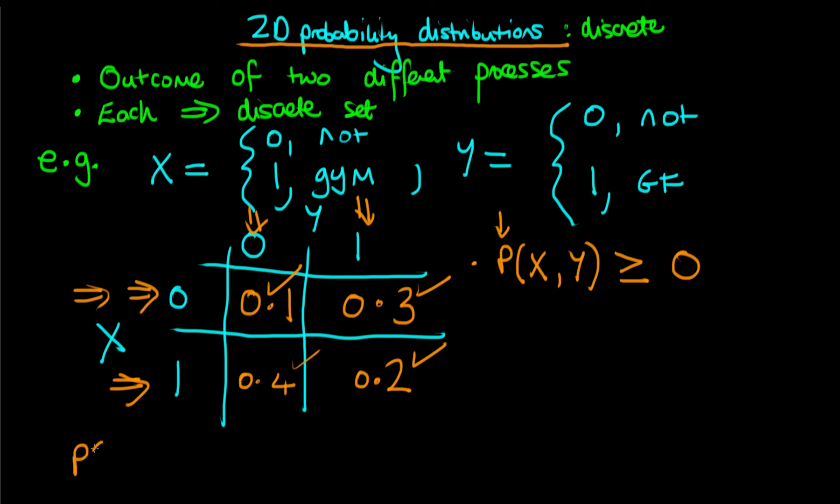Just for clarity here, the probability that x is equal to 0 and y is equal to 0 is equal to 0.1, and we could do the same for the other potential outcomes here as well.